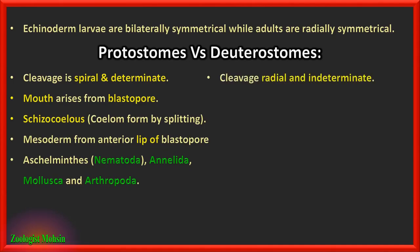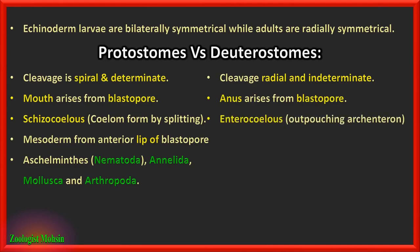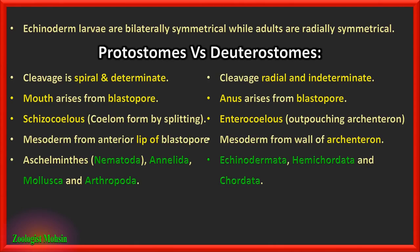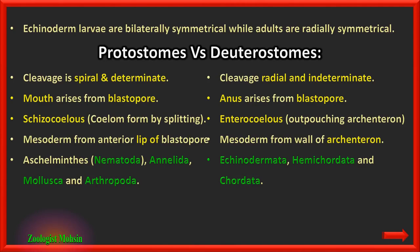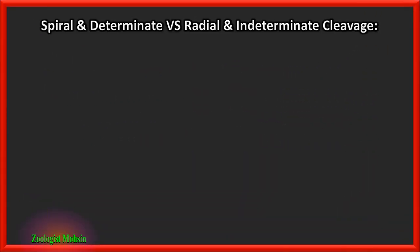In contrast to protostomes, among deutostomes the cleavage is radial and indeterminate; the anus arises from the blastopore first. They are enterocoelous — meaning the cavity is formed by outpouching of the archenteron; the mesoderm forms from the wall of the archenteron. The phyla among deutostomes are Echinodermata, Hemichordata, and Chordata. These phyla are very important to remember, especially with respect to schizocoelous and enterocoelous, as schizocoelous phyla have been asked in past papers.